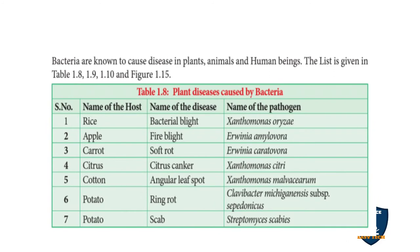Now we are going to see the harmful aspects. Bacteria cause diseases in human beings, plants, and animals. Plant diseases caused by bacteria: rice — bacterial blight by Xanthomonas oryzae; apple — fire blight by Erwinia amylovora; carrot — soft rot by Erwinia carotovora; citrus — citrus canker by Xanthomonas citri; cotton — angular leaf spot by Xanthomonas malvacerum; potato — ring rot by Clavibacter michiganensis subsp. sepedonicus; potato — scab by Streptomyces scabies.